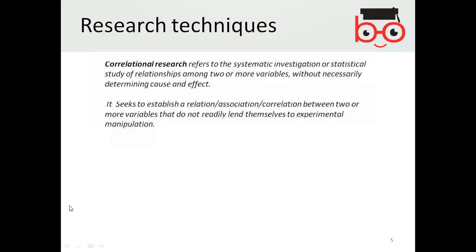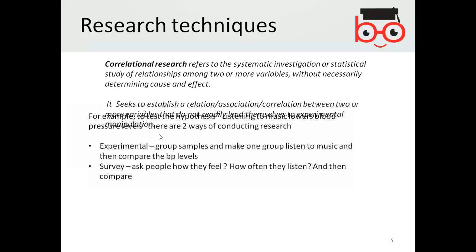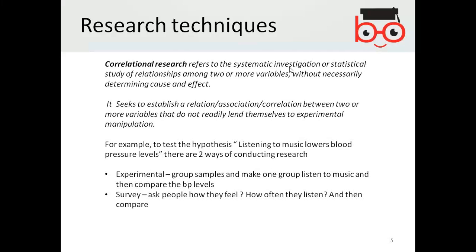Correlational research refers to the systematic investigation or statistical study of the relationships among two or more variables without necessarily determining causes and effects. It seeks to establish a relationship, association, or correlation between two or more variables that do not really lend themselves to experimental manipulation.